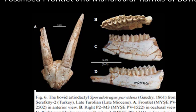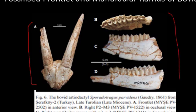This is a photograph of a bovid and artiodactyl species named Sporadotragus providencia. It was found in the late Miocene. This photograph shows the frontlet displaying the horns of a bovid, along with different views of the mandibular part of the jaw. You can easily see that different types of molars and premolars are shown, which have brachyodont teeth with low crown.